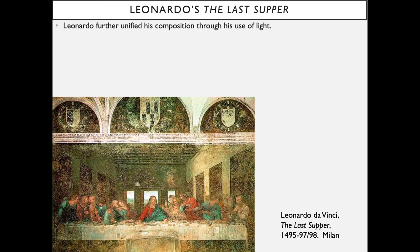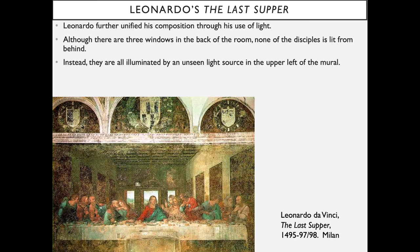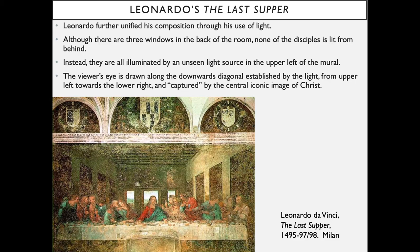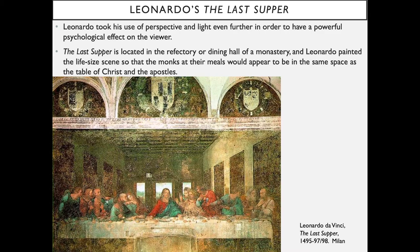Leonardo further unified his composition through his use of light. Although there are three windows in the back of the room, none of the disciples is lit from behind. Instead, they are all illuminated by an unseen light source in the upper left of the mural. The viewer's eye is drawn along the downward diagonal established by the light from upper left towards the lower right, and captured by the central iconic image of Christ. Leonardo took his use of perspective and light even further in order to have a powerful psychological effect on the viewer. The Last Supper is located in the refectory or dining hall of a monastery, and Leonardo painted the life-size scene so that the monks at their meals would appear to be in the same space as the table of Christ and the apostles.